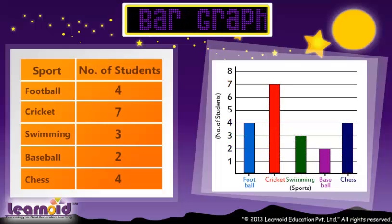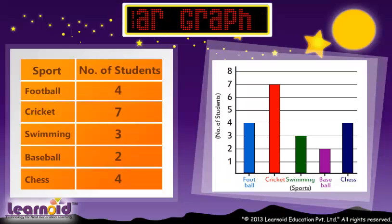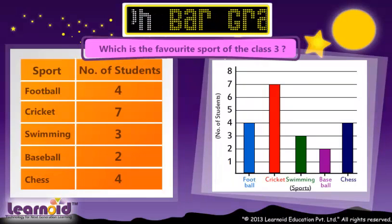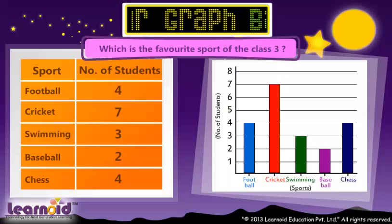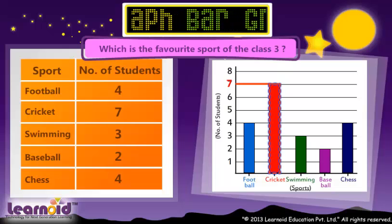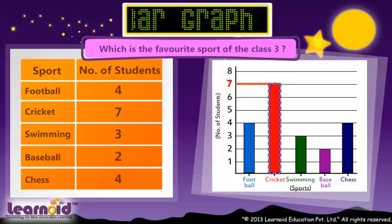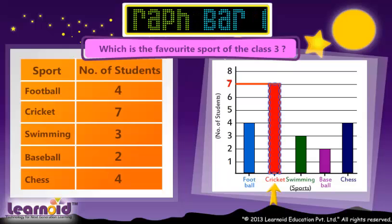Once the Bar Graph is drawn, we can answer questions like: which is the favorite sport of class 3? We see the highest bar and answer it. It is Cricket.